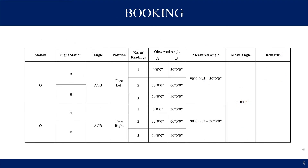Then you have to record all your readings in the field book. The table will include: instrument station, angle, position, number of readings, observed angle, measured angle, mean angle and remarks. The instrument station is O, and the side stations are A and B. The angle is A-O-B. The position will be face left and face right. You must take 3 readings in each face left and face right position, so repetition is 3 times.